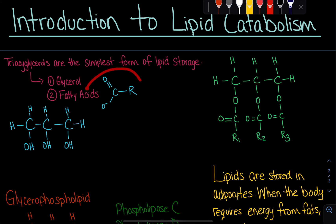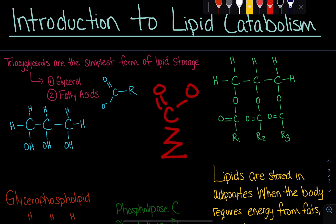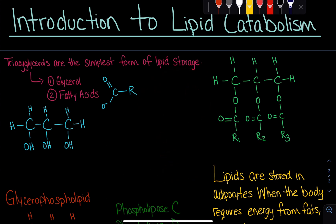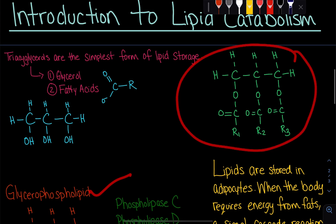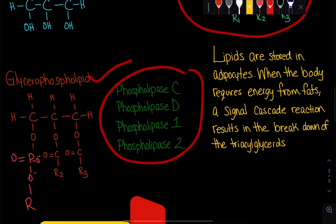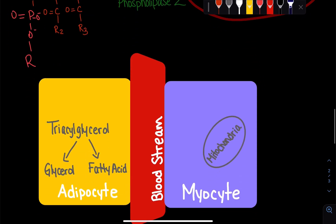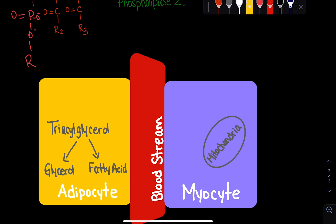To summarize: fatty acids are long aliphatic, amphipathic chains — hydrophobic along the hydrocarbon chain but polar at the carboxyl group. Glycerol is a three-carbon molecule with three hydroxyls. We can have glycerophospholipids or triacylglycerols, broken down by various lipase enzymes. Lipids are stored in adipocytes, broken down there to their components, and sent wherever needed to produce energy.